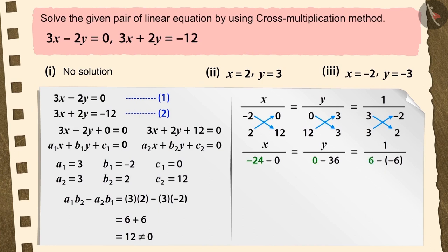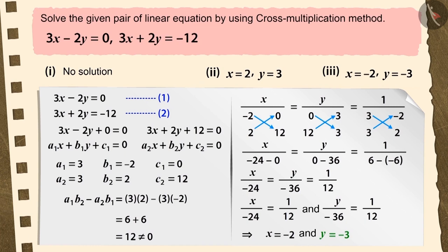Now after multiplying according to the arrows, we subtract the second product from the first product, which gives us x equals minus 2 and y equals minus 3, which is the only solution for the given pair of linear equations.